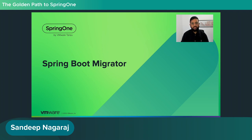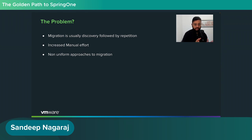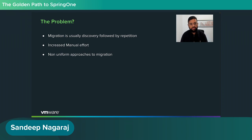Before we start, I'd like to look at the problem in general. The problem we are trying to solve is repetition. Whenever you do any kind of migration job, you do discovery on how to migrate it, and then you do it repeatedly over and over again if you have more than one application. If you have one or two applications, fine, but if you have hundreds, it's a problem.